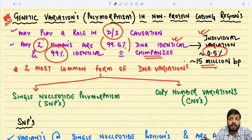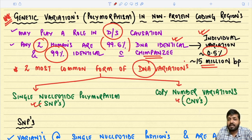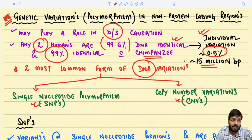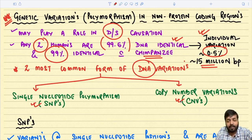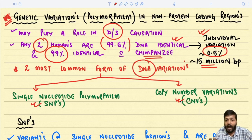Only this 0.5 percent variation is producing so much phenotypic diversity between individuals. The two very common forms of DNA variation between individuals are SNPs — single nucleotide polymorphism — and CNVs — copy number variation. These can explain a lot of disease causation that occurs in individuals.